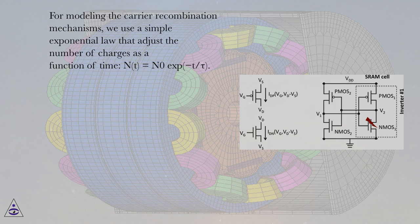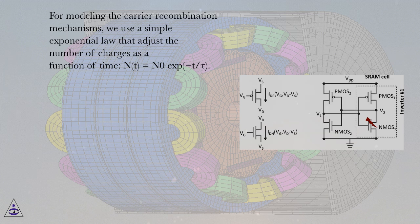For modeling the carrier recombination mechanisms, we use a simple exponential law that adjusts the number of charges as a function of time: n(t) equals n0 times e to the minus t over tau.